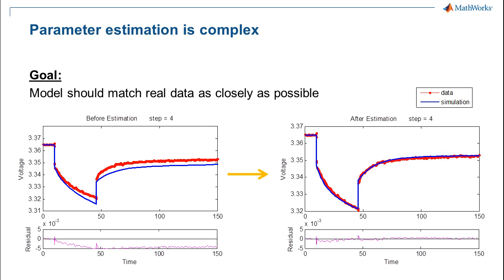When we perform parameter estimation, our goal is to take experimental data with certain dynamic content and find the best possible parameter values to make the model match the data.